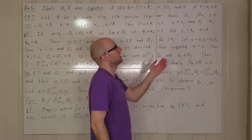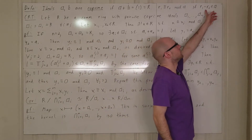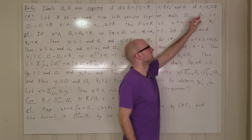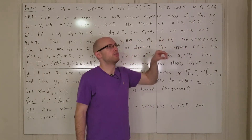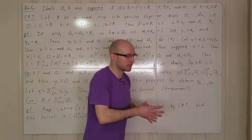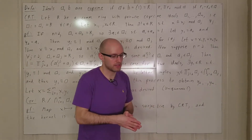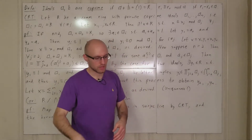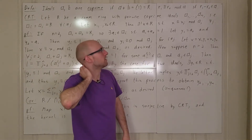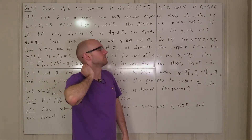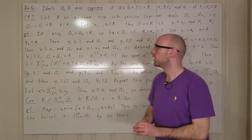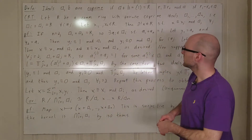Another way to think of this: if you put r2 on the other side of the equation, that says r1 is in r2 plus a, meaning r1 is in the r2 coset of this ideal, if you quotient out the ring.